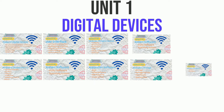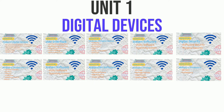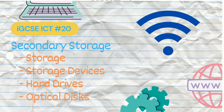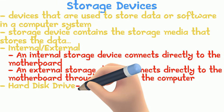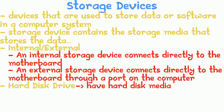Under Unit 1 Digital Devices, we have 10 videos — a fairly simple chapter, so we didn't get many requests. However, we were requested on storage media. Hard disk drives have hard disk media and can be connected either internally or through external methods like Wi-Fi or USB ports.